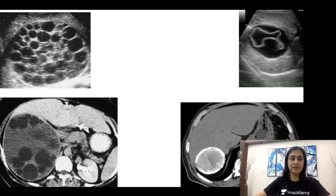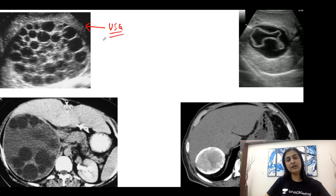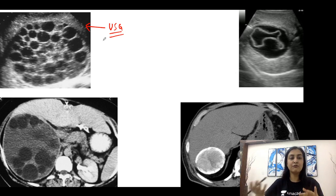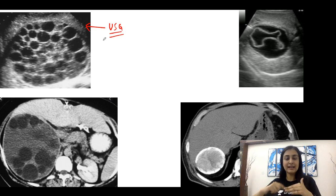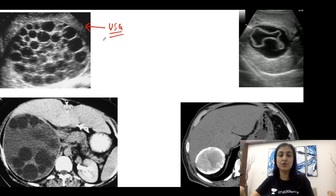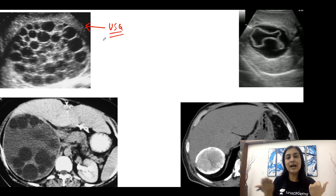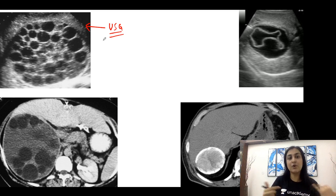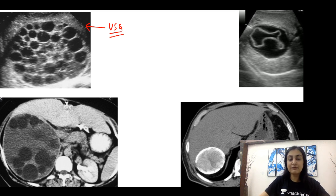Looking at imaging examples: you do not need to memorize each stage by number, just understand the sequence of how hydatid evolves with variable appearances on different modalities. Here we see multiple daughter cysts giving a honeycomb appearance on ultrasound. This perfectly correlates with the schematic diagram discussed earlier.